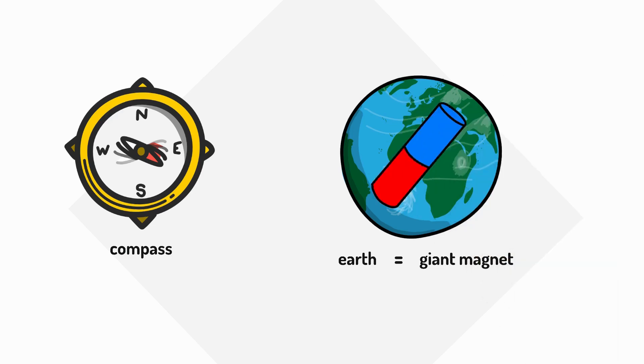Magnets always line up with magnetic fields, so when you let a small magnet move freely, like the needle in a compass, it automatically lines up with Earth's magnetic field and points towards the north pole.